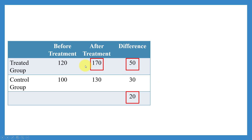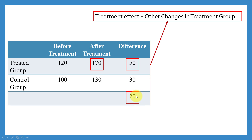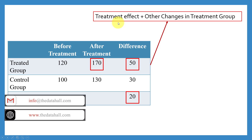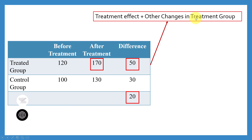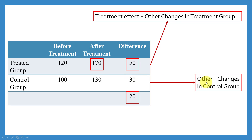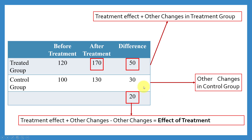If we change the values — let's say instead of 130, the treatment group production increased to 170 — then the difference between the treated group's difference and the control group's difference would return 20. This means production increased by 20 units due to the treatment effect. The treated group's value contains the treatment effect plus other changes, while the control group's value of 30 contains all other changes without the treatment effect. Taking the difference of these two isolates the treatment effect.